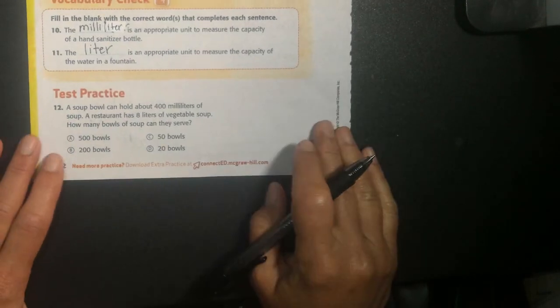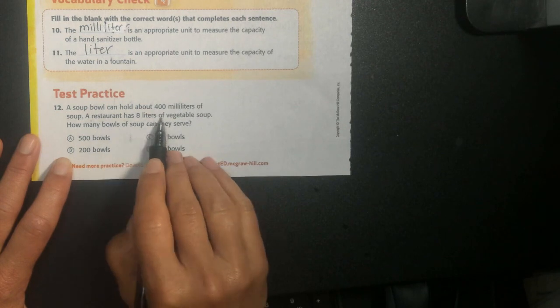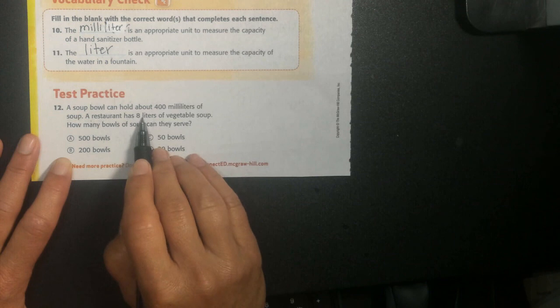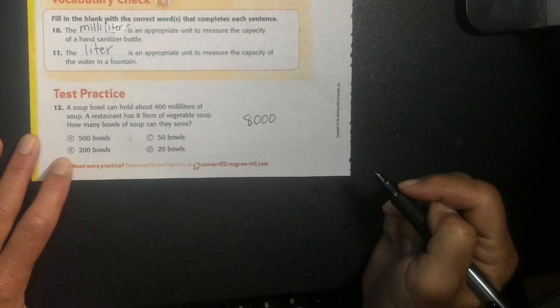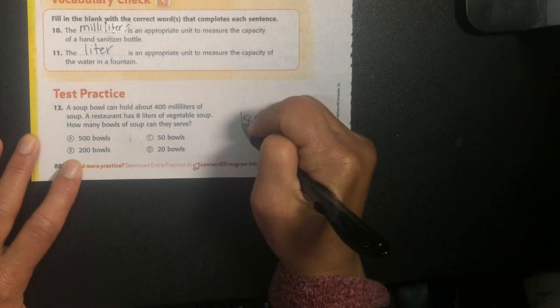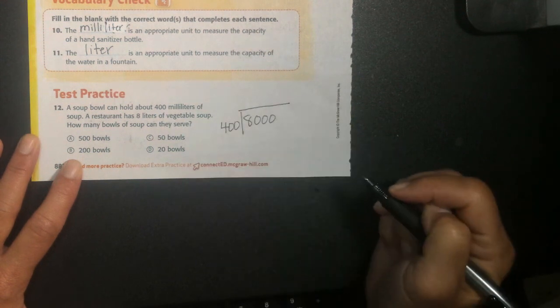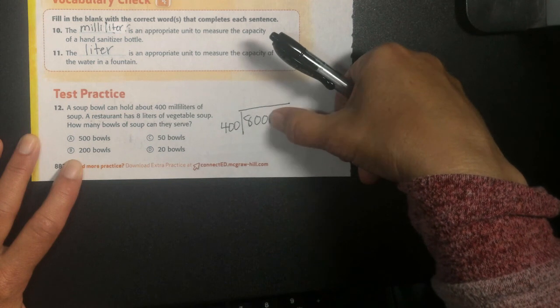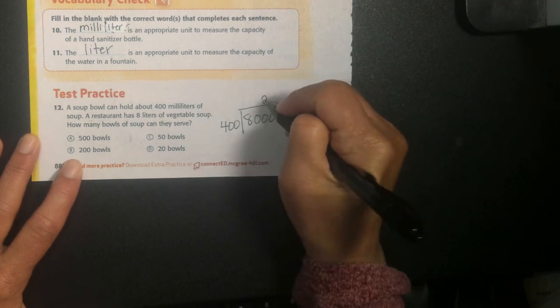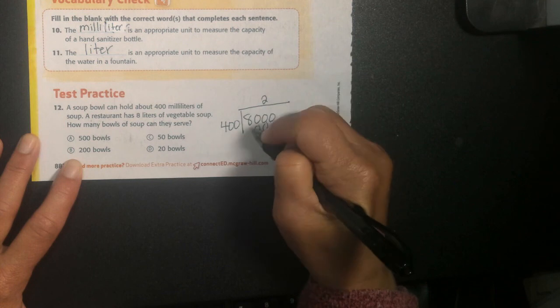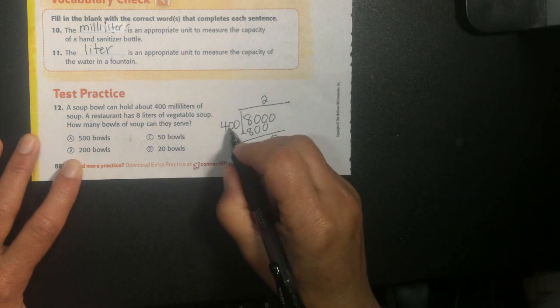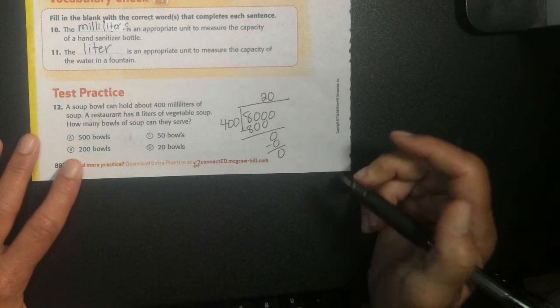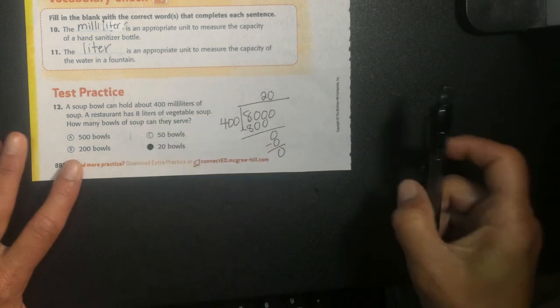A soup bowl can hold 400 milliliters of soup. A restaurant has eight liters of vegetable soup. How many bowls of soup can they serve? One bowl is 400 milliliters. I have eight liters, which means I have 8,000 milliliters. I know eight liters would turn into 8,000 milliliters. I'm going to divide that by 400 milliliters in each bowl and see how many bowls I get. Can 400 go into 8? No. Into 80? No. Into 800? Yes. So I'm going to start writing my answer above the 800. Something times 400 is 800: 2. 2 times 400 is 800. Subtract, I get a 0. How many times can 400 go into 0? 0 times. I'm done. I used all my numbers. I don't need any decimals. And I know I have 20 bowls of soup.